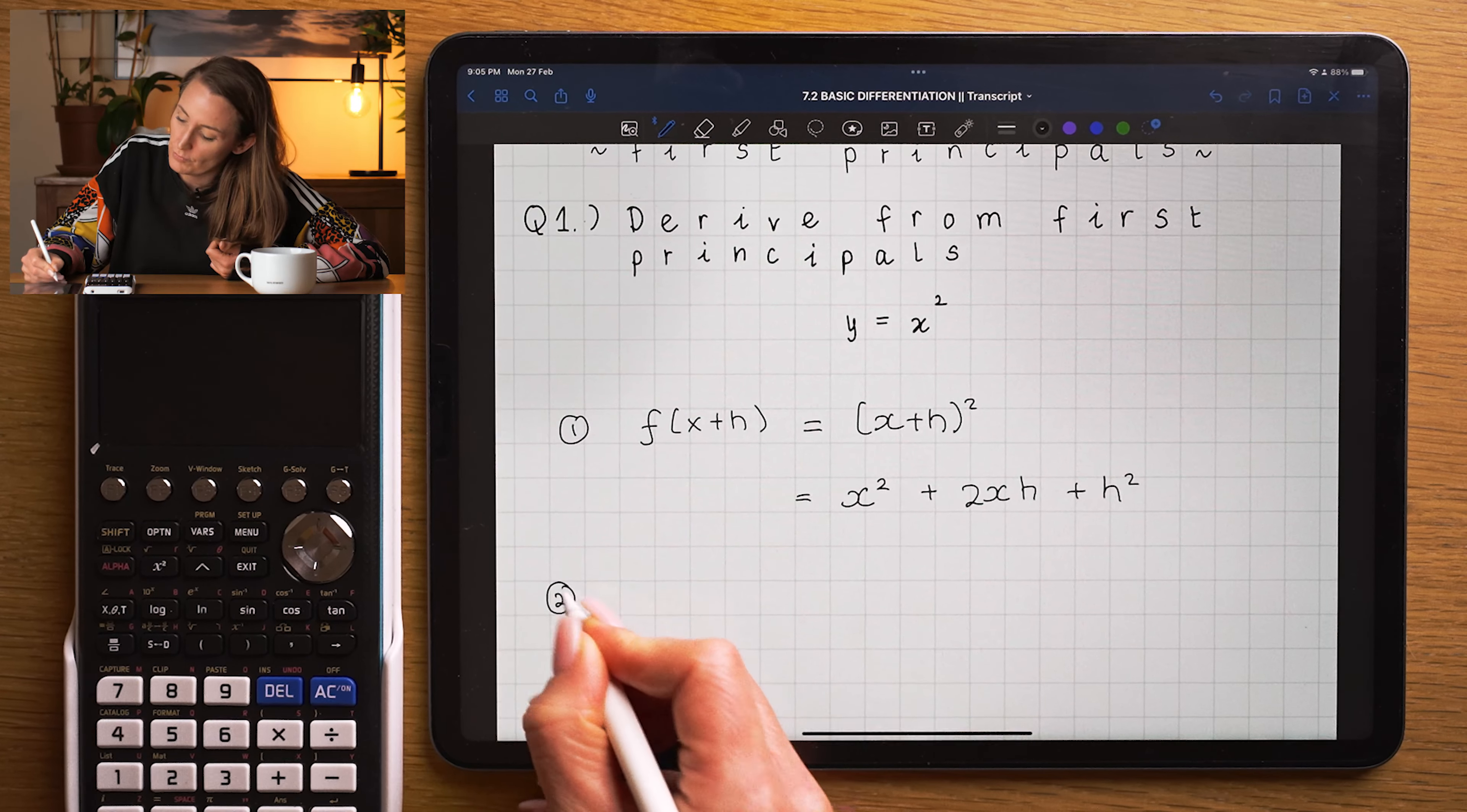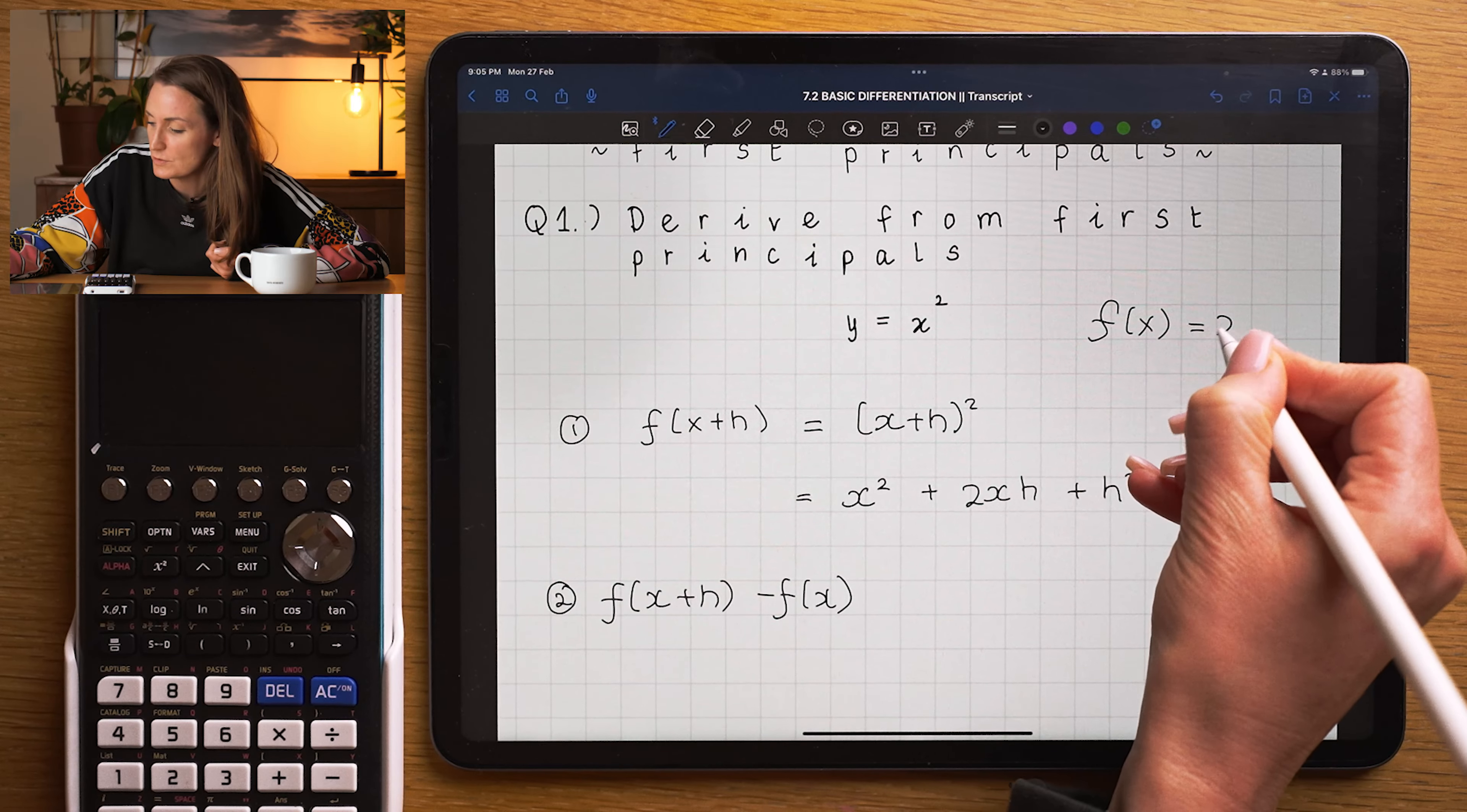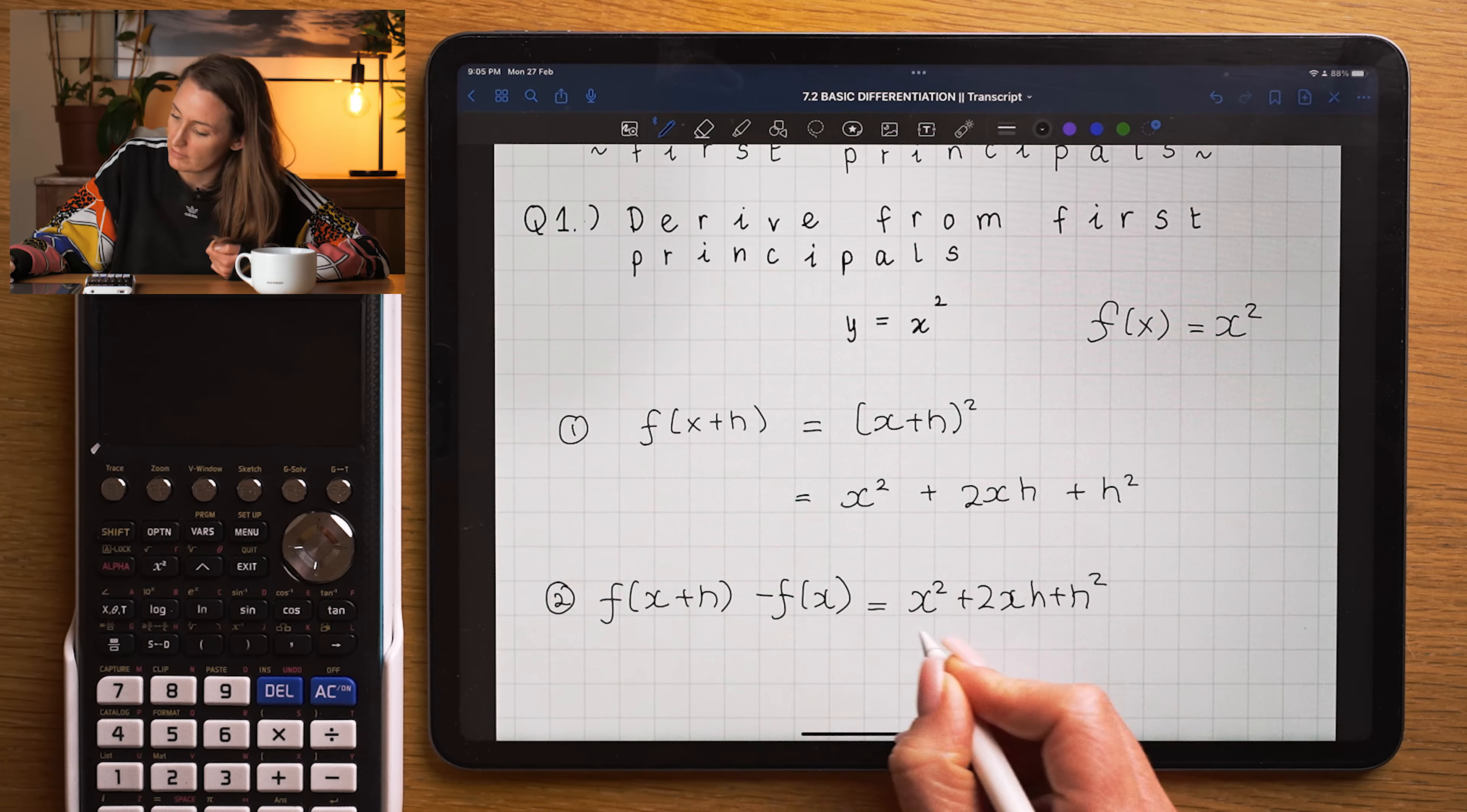Step two, you want to work out what is f of x plus h, take away f of x. Well, I'm assuming here that f of x is equal to x squared, so I'm going to take my previous expression for f of x plus h,